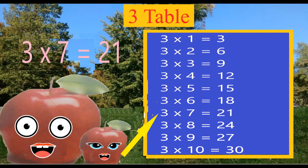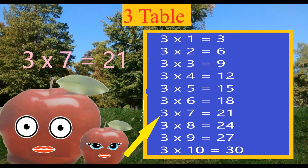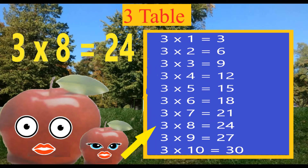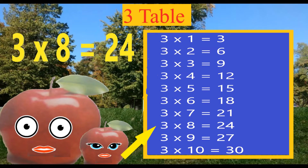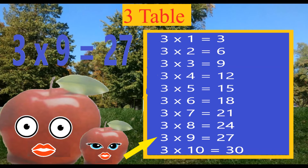Three sevens are twenty-one. Three eights are twenty-four. Three nines are twenty-seven.